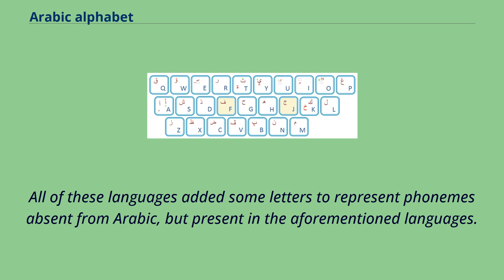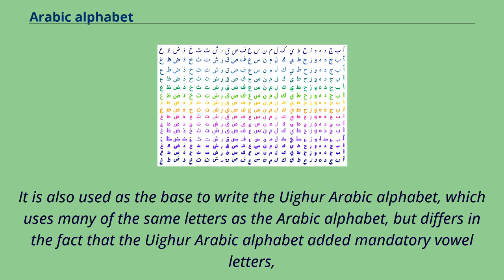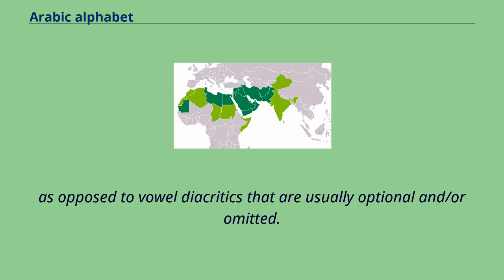All of these languages added some letters to represent phonemes absent from Arabic but present in those languages. It is also used as the base to write the Uyghur Arabic alphabet, which uses many of the same letters as the Arabic alphabet, but differs in that the Uyghur Arabic alphabet added mandatory vowel letters, as opposed to vowel diacritics that are usually optional and/or omitted.